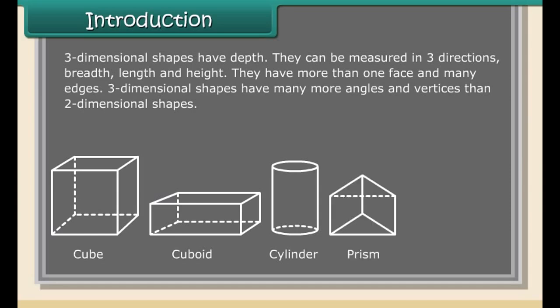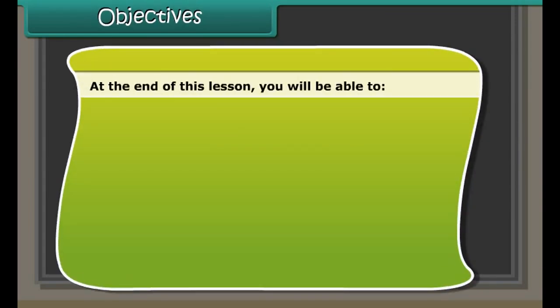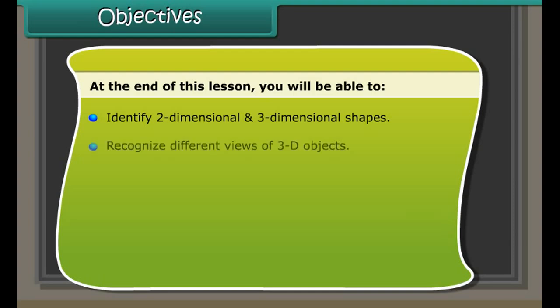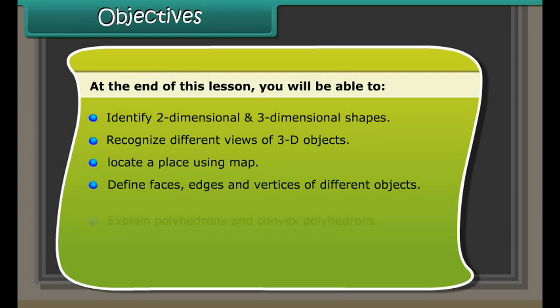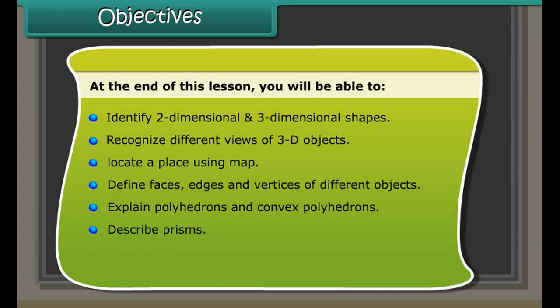Cylinder, prism, pyramid, etc. Objectives: at the end of this lesson you will be able to identify two-dimensional and three-dimensional shapes, recognize different views of 3D objects, locate a place using a map, define faces, edges and vertices of different objects, explain polyhedron and convex polyhedrons, describe prisms, discuss pyramids, and apply Euler's formula to combinations of different shapes.